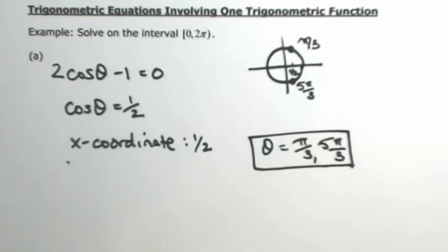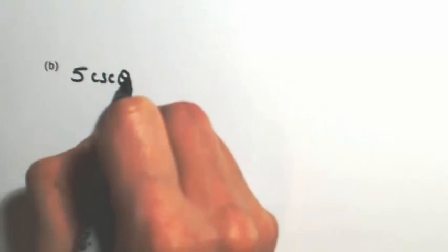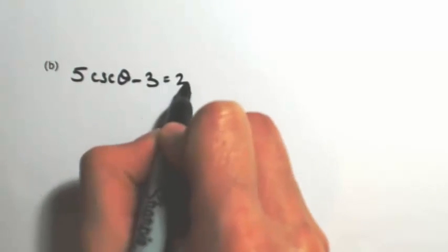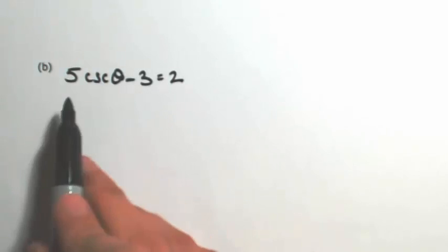Let's try another one. Let's say we have 5 times the cosecant of theta minus 3 equals 2. Again, getting the angle by itself, I need to get the cosecant of theta by itself by adding 3 and then dividing by 5.